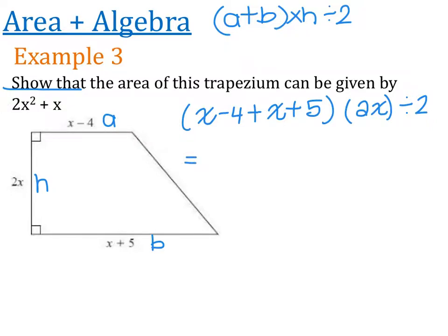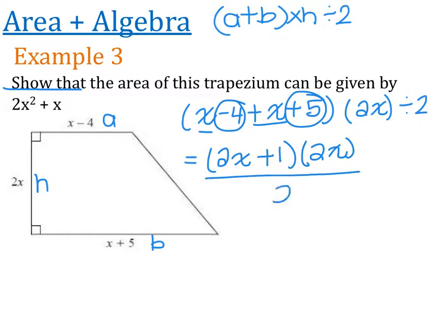So let's go ahead and try that. So in this bracket here, I've got plus x, which gives me 2x. And then I've got minus 4 plus 5, which gives me 1. And I want to multiply all of that by 2x. And then I'm going to divide everything by 2.